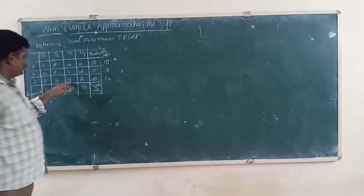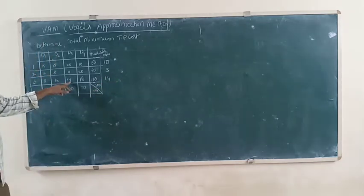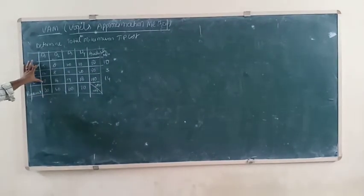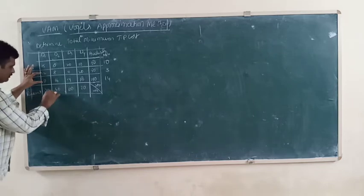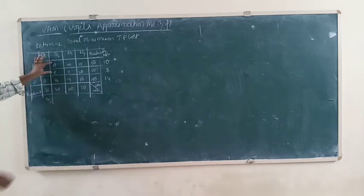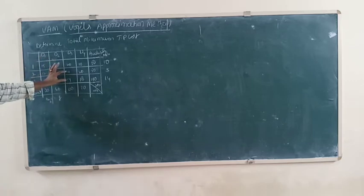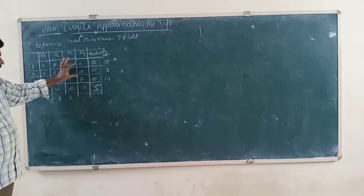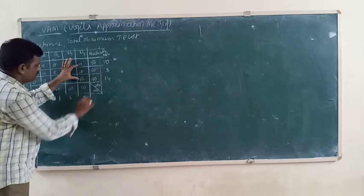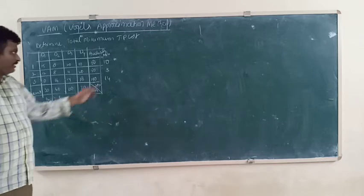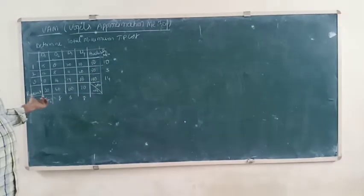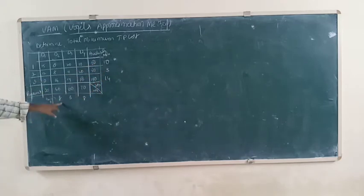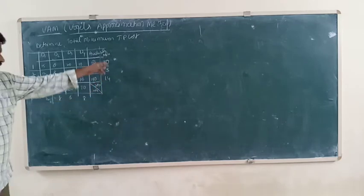For the third row, the minimum value is 0 and the second minimum is 14, so 14 minus 0 equals 14. Similarly for columns: the first column minimum is 0 and second minimum is 12. The column penalty values and the row penalty values are: 10, 3, 14, 12, 8, 3, 8. The maximum penalty value among these is identified.